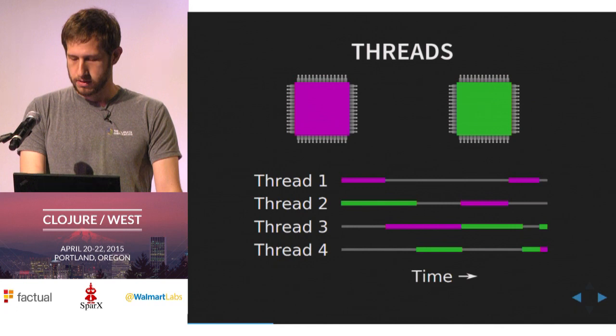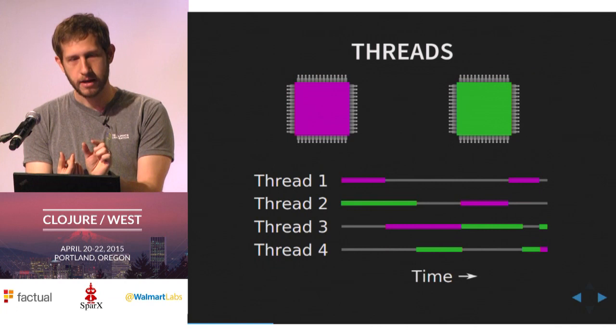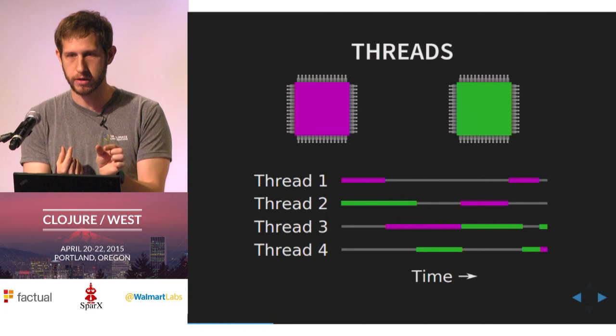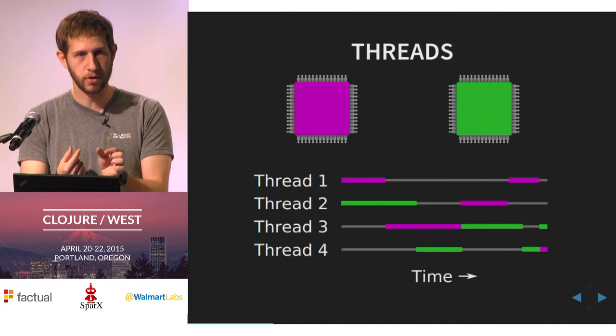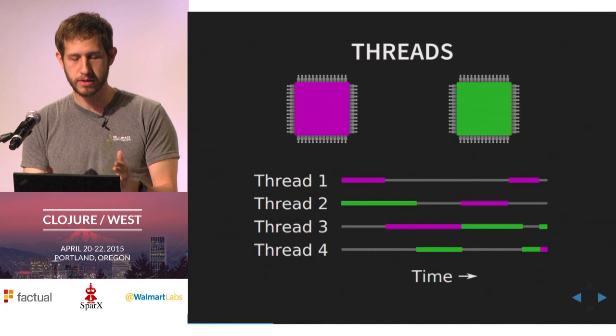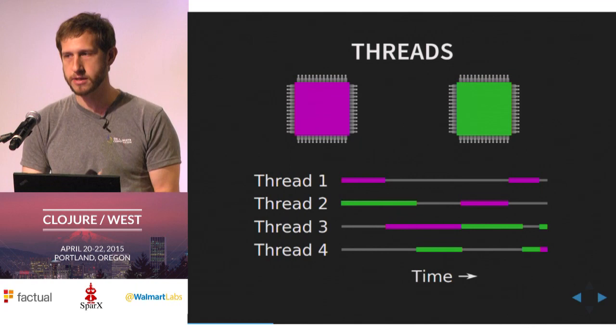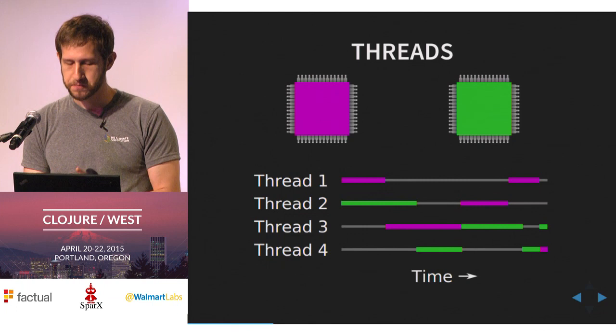Concurrency is when more than one thing could conceivably be reordered — you don't know which thread will run at any given time, it could be thread A or thread B. Parallelism is when more than one thing actually happens at once. You can get concurrency even with only one CPU core, but parallelism requires more. You can also have parallelism without concurrency — if you run multiple things simultaneously in lockstep, like what your GPU does, it runs a whole bunch of data computations and knows exactly what's happening at any time. Here I'm concerned with parallelism — I care about getting things done faster.